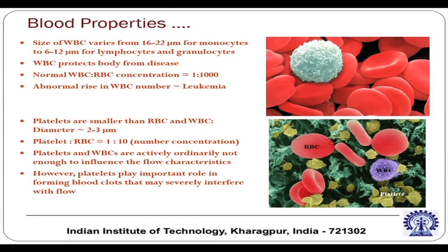Monocytes are significantly larger, but lymphocytes and granulocytes are typically less in size. WBCs protect the body from disease, and the normal WBC to RBC concentration ratio is 1 to 1000. An abnormal rise in WBC number is sometimes an indicator of a disease called leukemia. Platelets are smaller than RBC and WBC, with a diameter of about 2 to 3 micron, and the platelet to RBC ratio is 1 to 10. RBC is the dominating type of blood cell.